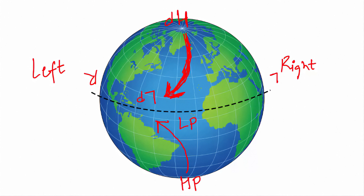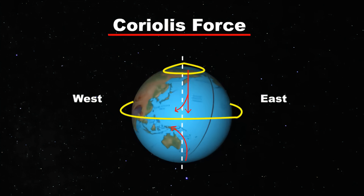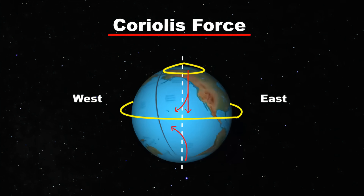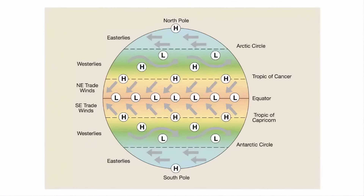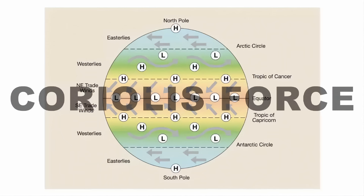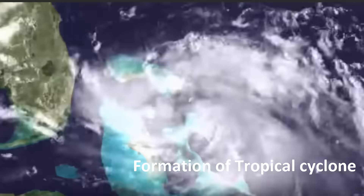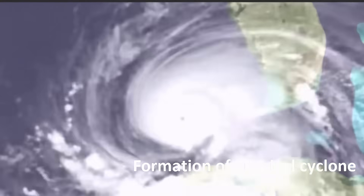Because of Coriolis force, there are certain pressure belts all over the earth's surface. You must be familiar with the picture showing the global wind circulation pattern — at different latitudes, there are different pressure belts, and their existence is simply due to the movement of air to the left and right due to Coriolis force. Now let's understand how this air turns into a storm and what causes the spinning of a cyclone.